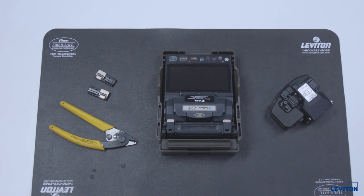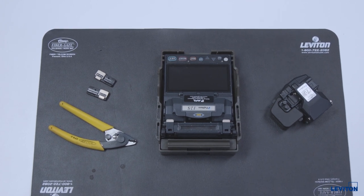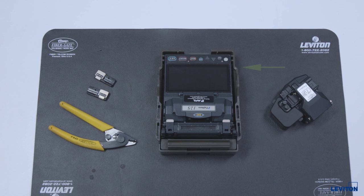A fusion splicer is also required during this termination process. The fusion splicing kit should include the splicing unit, a precision cleaver, a stripping tool or thermal stripper for removing ribbon or single fiber, and appropriate fiber holders.